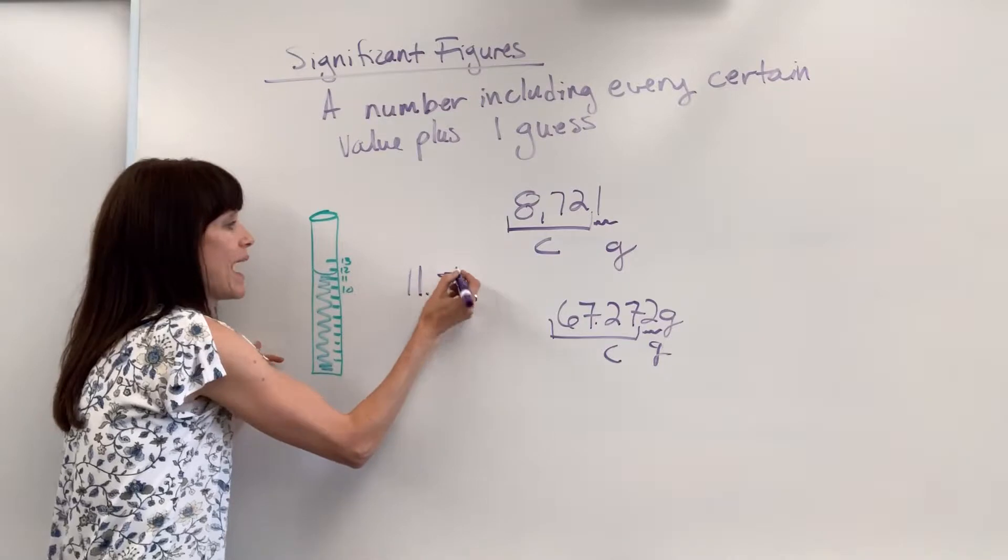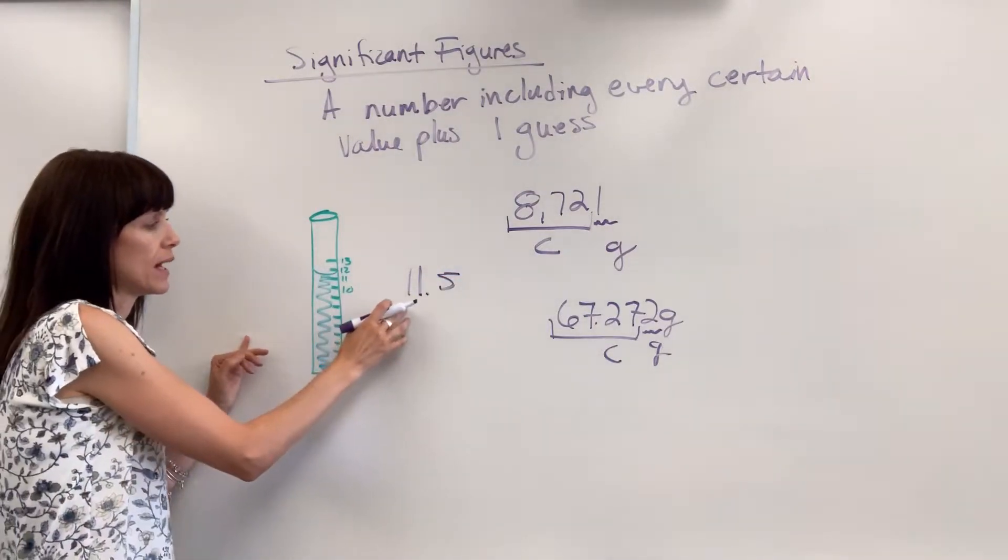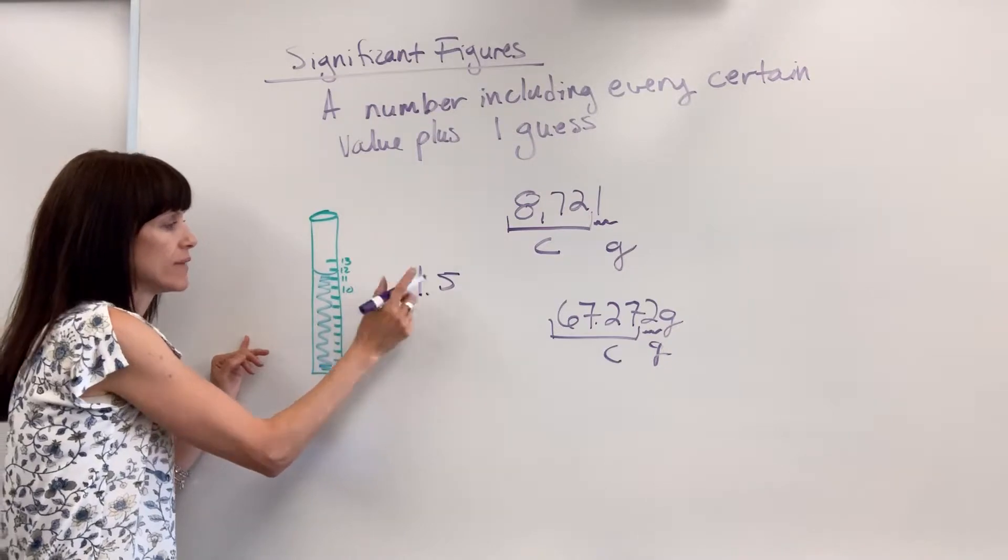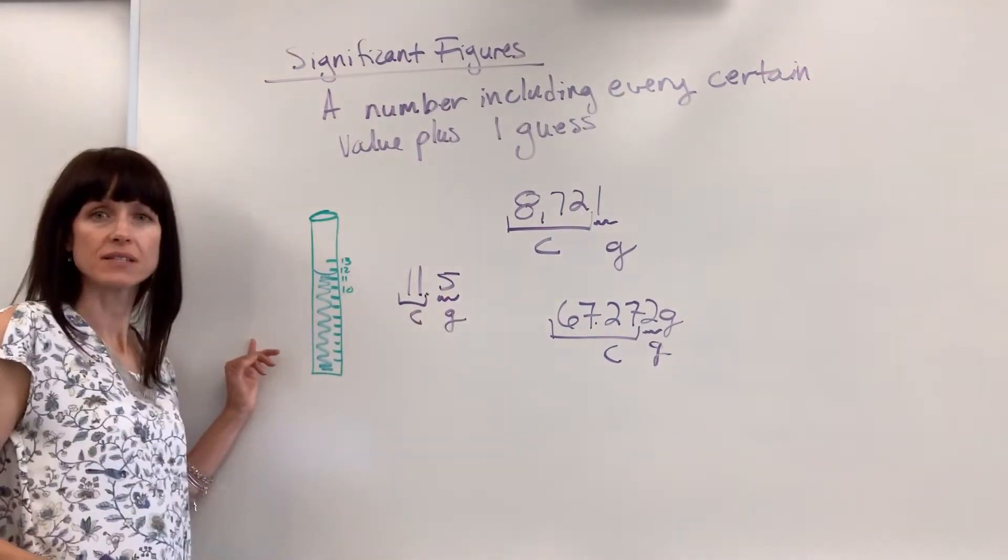My guess is that it's right in the middle, about a half, 0.5 of a mil. So I would have 11 as the certain values and 0.5 as the guess.